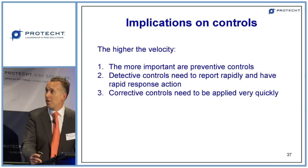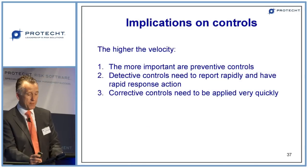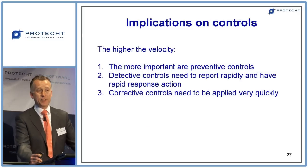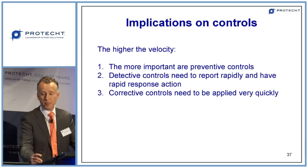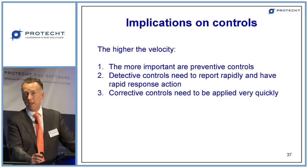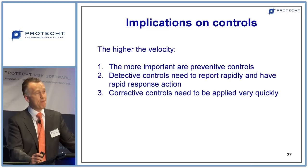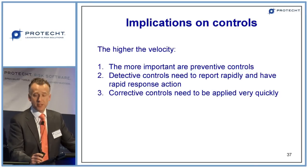In terms of implications of controls: the higher the velocity, the more important are preventive controls, because the horse has already bolted with a high velocity risk. Detective controls need to report rapidly and have rapid response action — if you leave it too long it's too late. And corrective controls need to be applied very, very quickly, otherwise the damage is done.